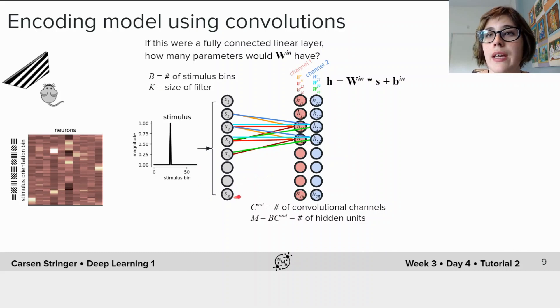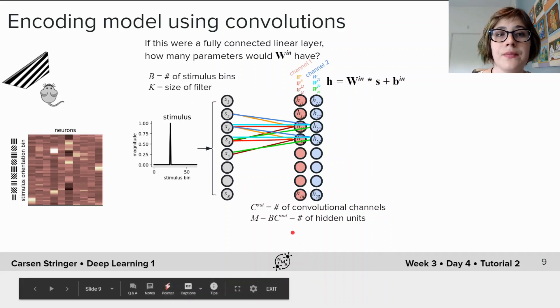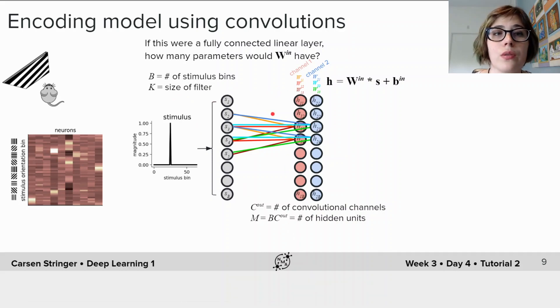So on the other hand, with this convolutional layer, how many weights do we have? We have k weights for each of our channels, so we have k times C_out weights.